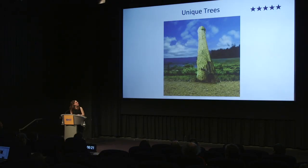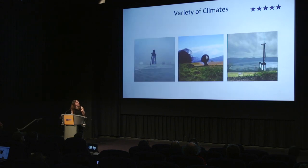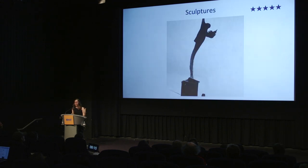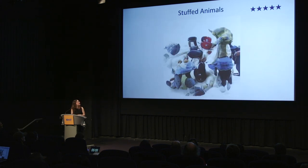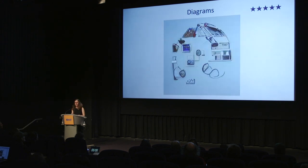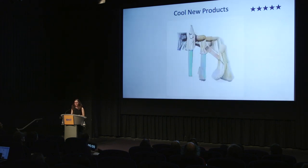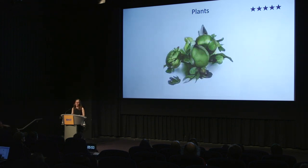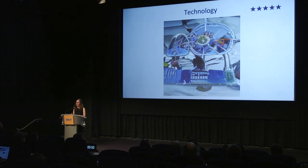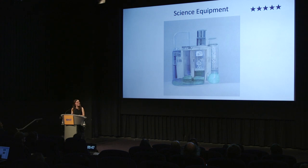I just want to go through how crazy this world is. I view this world as its own civilization with its own artwork, literature, and landscapes. There are crazy trees, all these different climates, artwork — I'm projecting that this is a sculpture even though it's a combination of genes. There are strange stuffed animals, diagrams that seem like they're trying to explain something but are sort of nonsensical. There are products, plants, maybe vegetables, technology, science equipment.